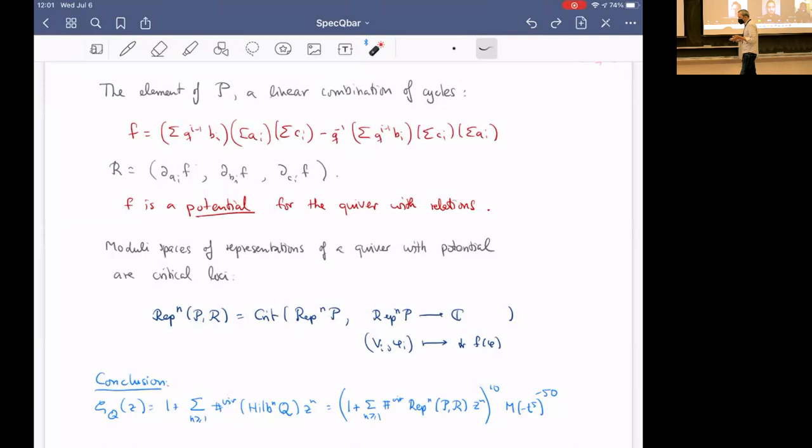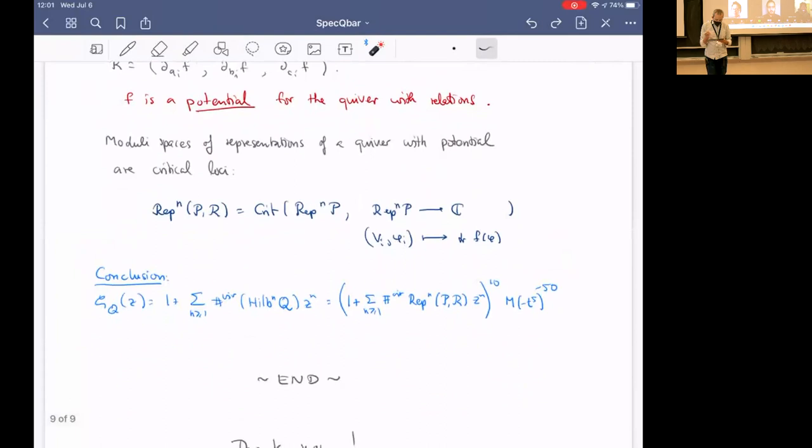This generating function for the virtual numbers of the Hilbert schemes is the corresponding generating function for the quiver with potential to the 10th power, corresponding to the 10 special points. Then there's a McMahon function which corresponds to everything outside my 10 special points, which turns out to be just like the commutative case. So we got a mixture between something that looks like the classical case and quiver representations. Maybe I'll have to stop here. Thank you.